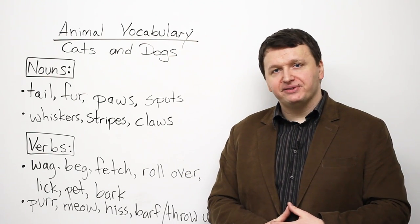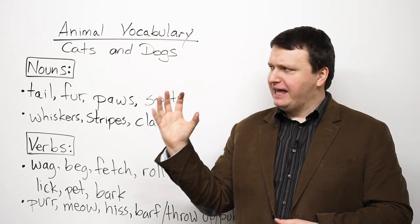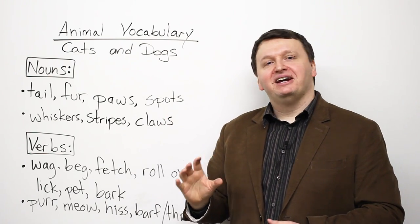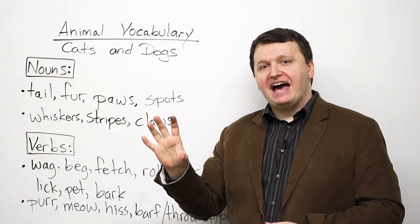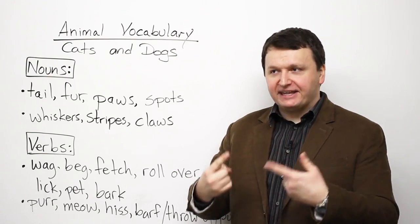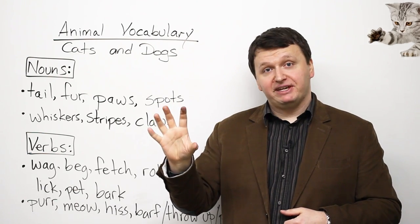And finally, we have claws. So claws are the nails of a cat, for example. A cat can have sharp claws. That can be a tongue twister. So claws are the nails of a cat.